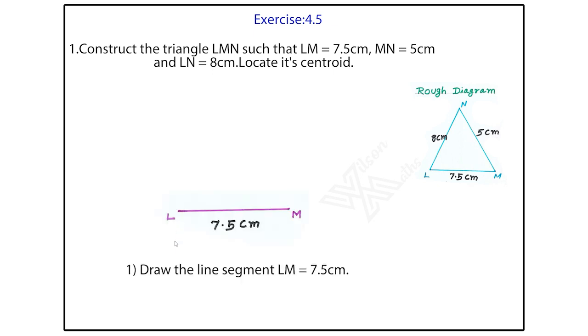First, draw the line segment LM equal to 7.5 cm. The scale take proper measurement 7.5 cm. Keep point in 0. In 0, we have to mark it L. And in between 7 and 8, 7.5. You keep it point in 0.5 cm and mark it as M. That is LM. Draw the line segment LM equal to 7.5 cm.